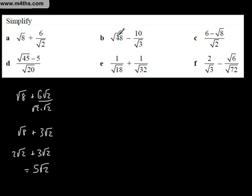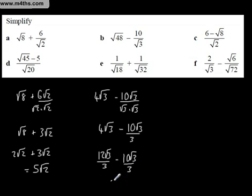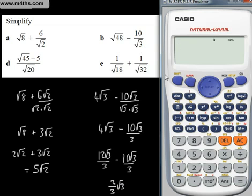Root 48 — well, root 48 is 16 times 3, so automatically we bring the 16 out and write it as 4 root 3. Minus 10 root 3 over root 3 multiplied by root 3 — we're just rationalising this. So we've got 4 root 3 minus 10 root 3 over 3. We can write 4 root 3 as 12 root 3 over 3, minus 10 root 3 over 3, which leaves us with 2/3 root 3. If we put it in the calculator as root 48 minus 10 over root 3, it comes up with exactly 2/3 root 3.